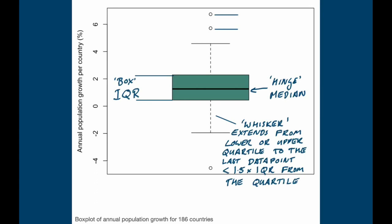Any data points that fall above or below the whiskers are drawn in as individual data points, and you'll often hear these called outliers. I don't like using that word because it implies these are data points that shouldn't be in the data set, which isn't necessarily the case. Obviously if 99% of values lie within the whiskers, then in a thousand data points you'd expect about 10 such points even with a perfect normal distribution. I'd rather call them extreme values, but 'outliers' seems to be set in the literature, so we'll carry on with that caveat.